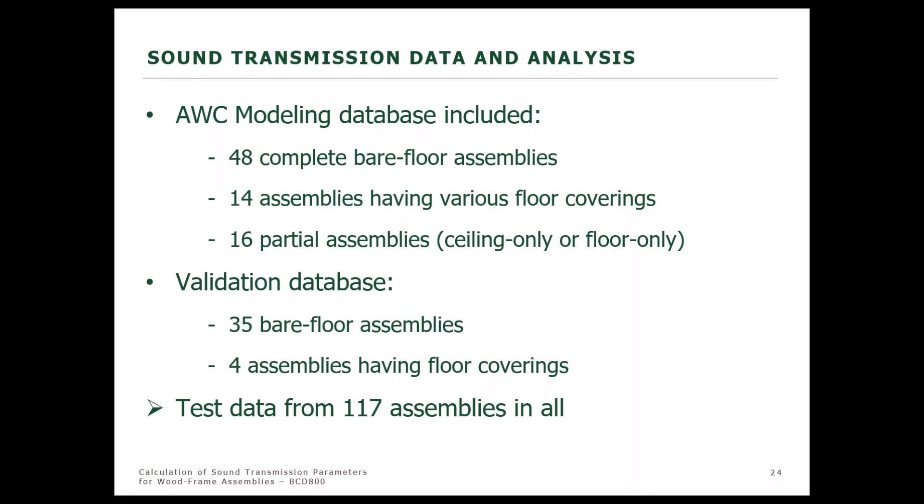With the addition of the new AWC test data, the modeling database included 48 complete bare floor assemblies (without floor coverings), 14 assemblies having various common generic floor coverings, and 16 partial assemblies — meaning assemblies consisting only of the framing and either the floor layer or the ceiling layer. There was also a separate validation database consisting of 35 complete bare floor assemblies and 4 assemblies having floor coverings, for a total of test data from 117 different assemblies.